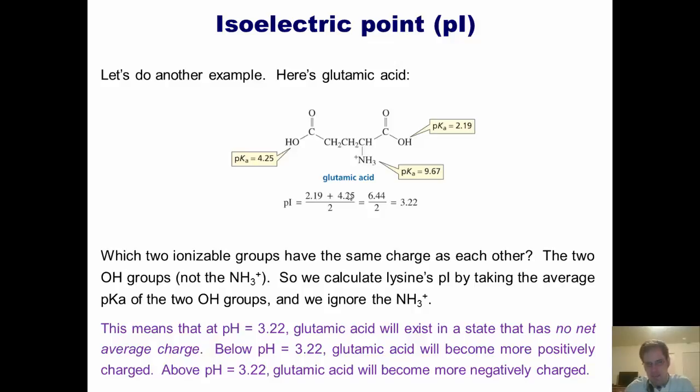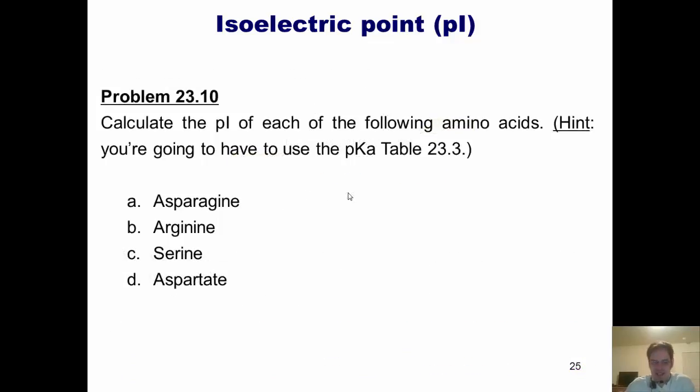Are you ready for some examples? Good. So I want you to calculate the isoelectric point, or pI, of each of the following amino acids. I should give you a hint. You're going to have to use the pKa table found on table 23.3 in your book, and also found in our earlier PowerPoint lecture on this chapter. But don't worry. I'm going to guide you through this problem over the next few slides and do a couple of these examples with you. I'll let you do the rest, of course.